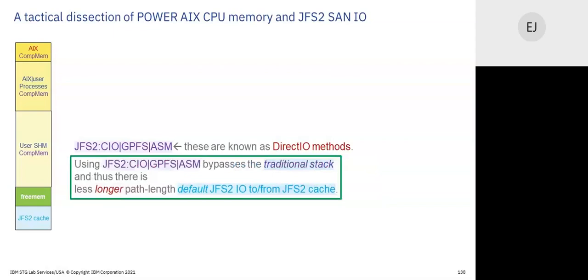Bypass the traditional stack — less long path length I/O. Tuning today is about sufficiency first: you have to have enough CPU, enough memory. But that's not all you need to do for tuning. Tuning today also includes avoiding avoidable workload — that's the principle by which I guide everything. If I can remove avoidable workload, everything runs better. But you need to understand the anatomy and physiology well enough to know what's removable and what's avoidable. Not doing something slow is ever and always faster than doing something slow.